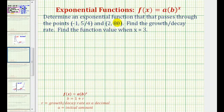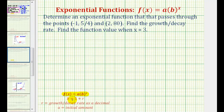We're asked to determine an exponential function that passes through the points negative 1, 5/4, and 2, 80. We also want to find the exponential growth or decay rate and the function value when x equals 3. If we have an exponential function in the form f(x) = a·b^x, the base b equals 1 plus r, where r is the exponential growth or decay rate expressed as a decimal. The value a is the initial value when x equals 0.